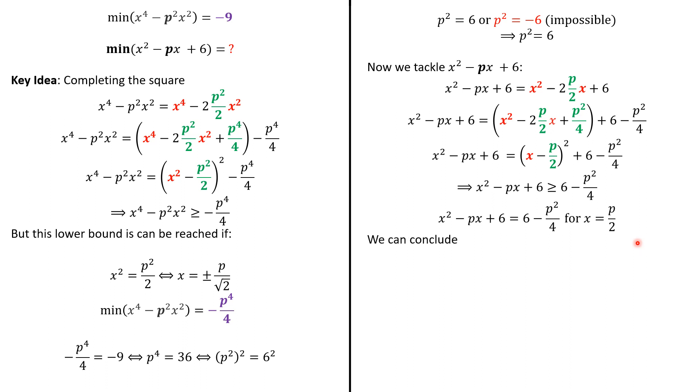So, that the minimum value of this quantity is 6 - p²/4. Now, we know that p² is 6. So, we can replace to have the exact values.